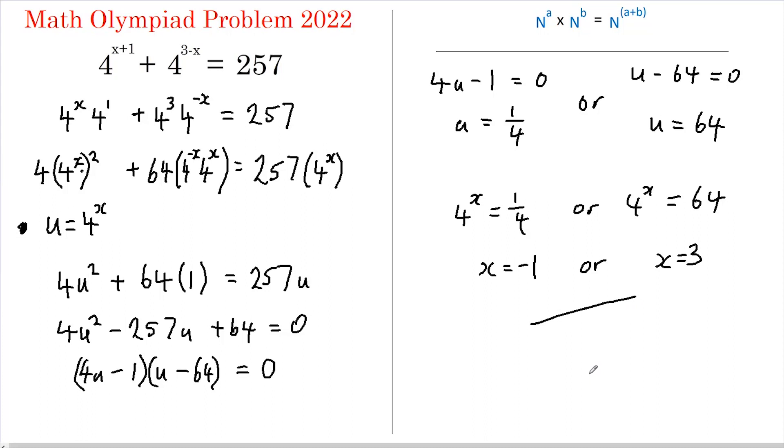Did you get it? Let's just do a couple of checks. If x equals negative 1 we've got 4 to the 0 and 4 to the 4.